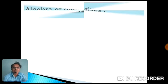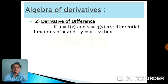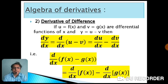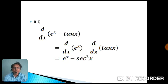For the derivative of a difference: if y = u − v, then dy/dx = du/dx − dv/dx, meaning the derivative of a difference equals the difference of the derivatives. For example, d/dx of (e^x − tan x) = d/dx(e^x) − d/dx(tan x) = e^x − sec²x.